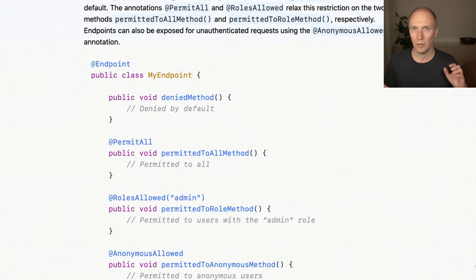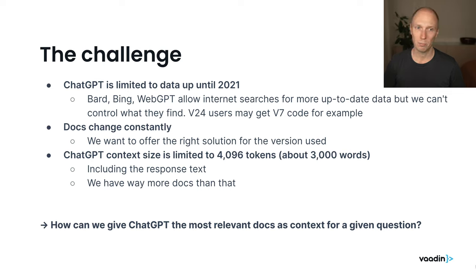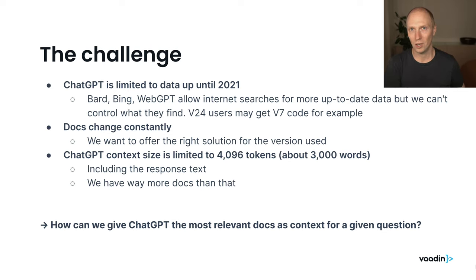The challenge is that ChatGPT is limited to data up until 2021. Many models like Bing or WebGPT allow internet searches for more up-to-date information, but the problem is we can't really affect what it finds. In our case, we have many versions over the years with API changes, so it would be very handy to specify that I want documentation for the specific version I'm using.